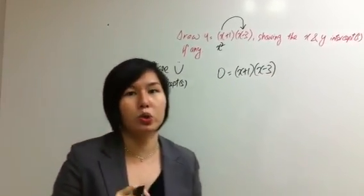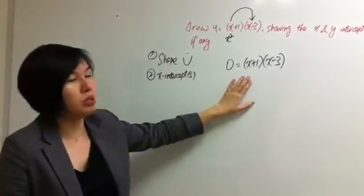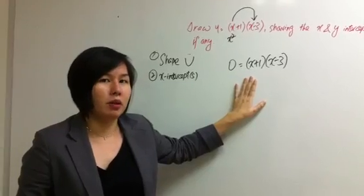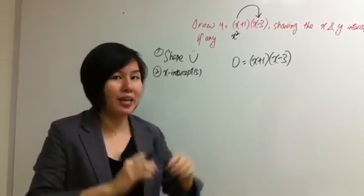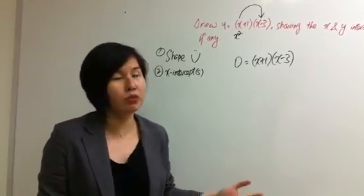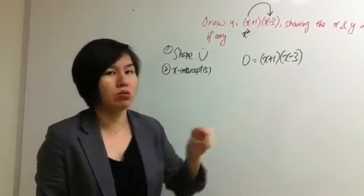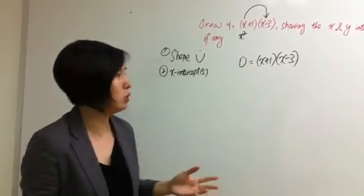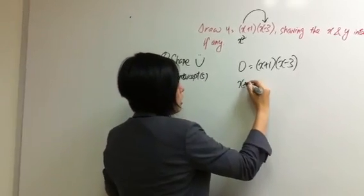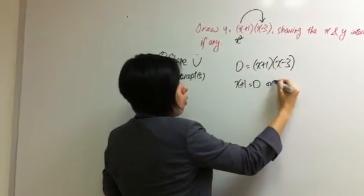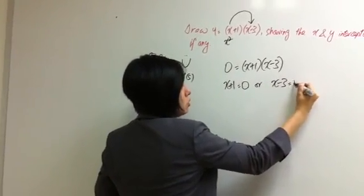I'm going to share with you a shortcut. Many students, when they reach this step, what they will do is they will usually expand. But in this case, you don't have to. Why? Because it is clearly factorized into two factors. So what we do is, we just conclude x plus 1 equals to 0 or x minus 3 equals to 0.